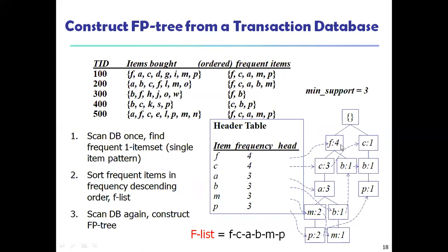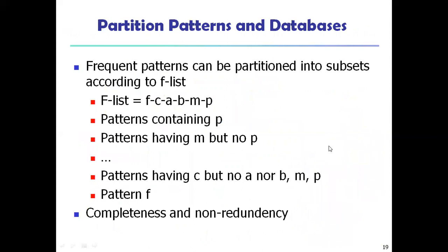Tracing the path: F occurs 4 times, C occurs 4 times (3 plus 1 equals 4), A is 3, B is 3 (1 plus 2 equals 3), M is 3 (2 plus 1 equals 3), and P is also 3 (2 plus 1 equals 3). So the counts are all correct. We arrange these in descending order and frame the frequent item list.